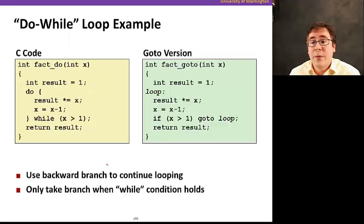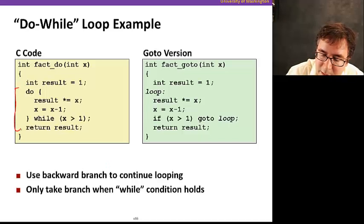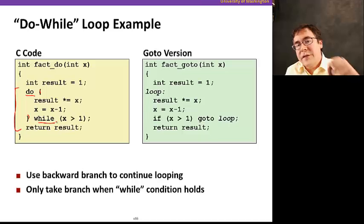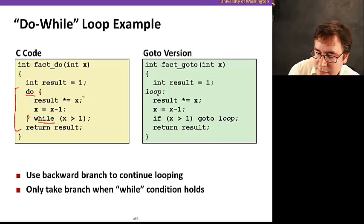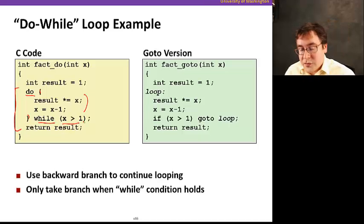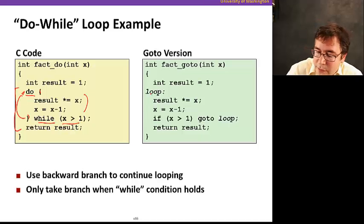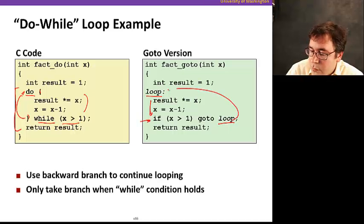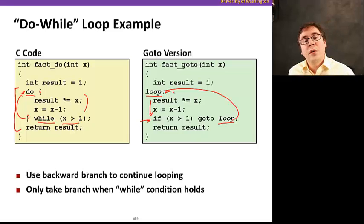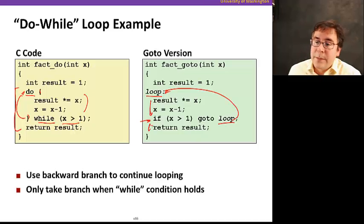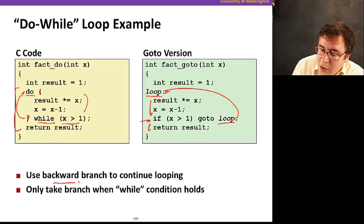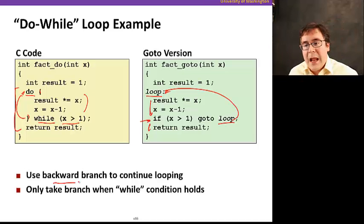Let's start with a do-while example. The way do-while works: you have the loop body, then you check a condition. So the first iteration of the loop is always executed no matter what — we execute at least once before we evaluate the condition. If the condition is true, we jump back to the beginning of the loop. We can look at this in the form of go-to's: we have a label at the beginning of the loop, execute the body, evaluate the loop condition, and if it's true, we jump back. Note that we have what we call a backwards branch — we only take this backward branch while the condition holds.